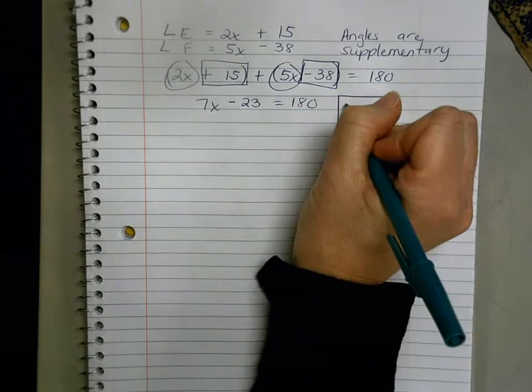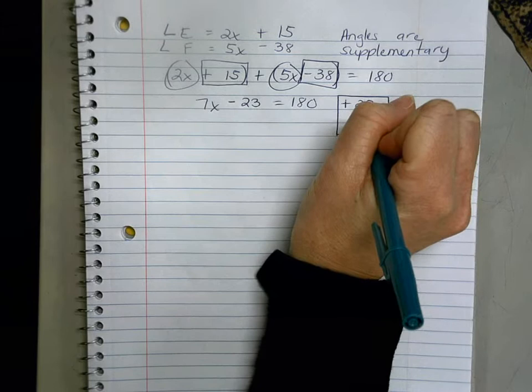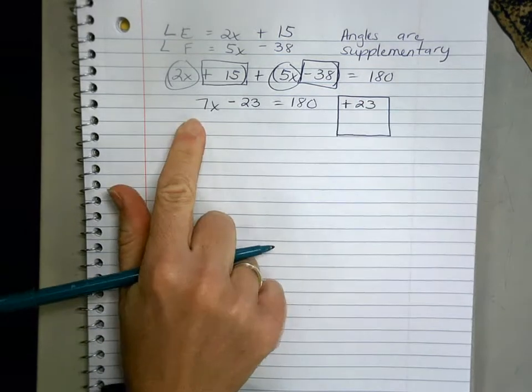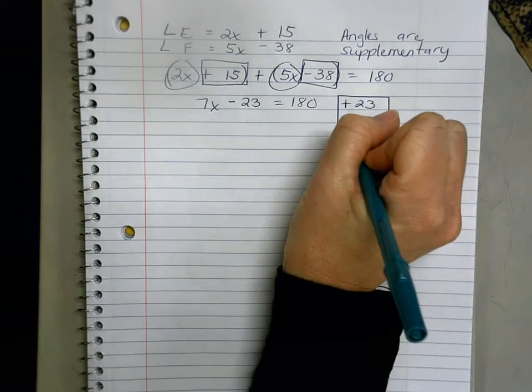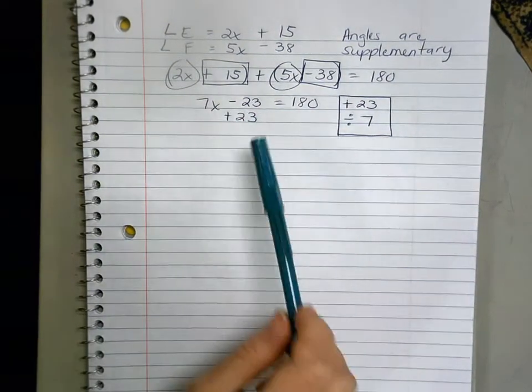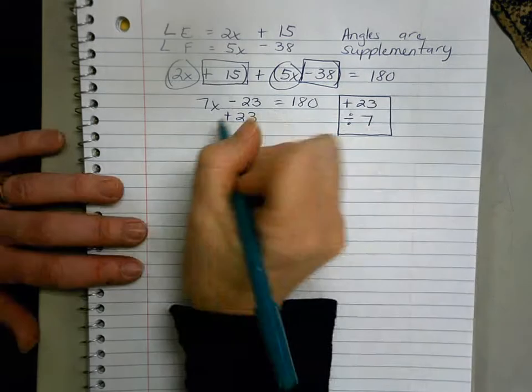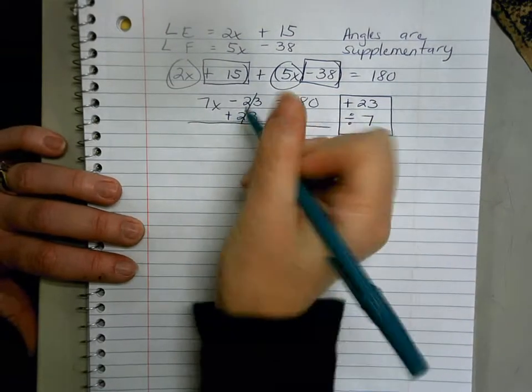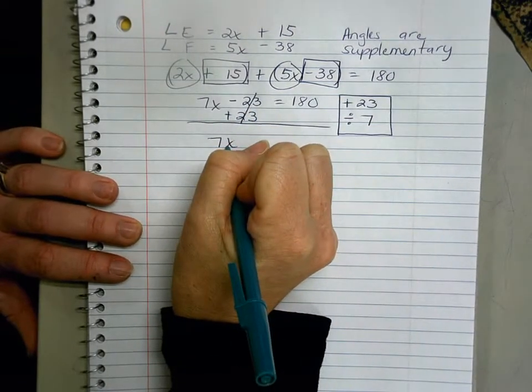So instead of subtracting 23, I'm gonna add 23, and then instead of multiplying by 7, I'm gonna divide by 7. And this is why we do that: if we add 23 to the left side, we're gonna get a zero pair, which means we can get rid of these and we have 7x all alone.